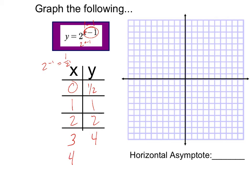There's no vertical translation in this problem, so the horizontal asymptote stays at y equals 0. As we go to negative infinity the values approach 0, but we never hit it. You'll talk about that more formally in a calculus class using limits, but for now we recognize the horizontal asymptote as y equals 0.